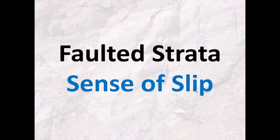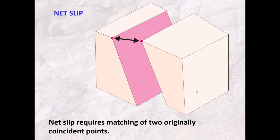Let's dive deeper into the sense of slip. A fault plane will have a net slip — a total amount and direction of movement. To calculate net slip, we need to find two points on either side of the fault plane that would originally have been contiguous. This point, before the fault happened, would have sat on top of that point, and the total separation between them after faulting is called the net slip.